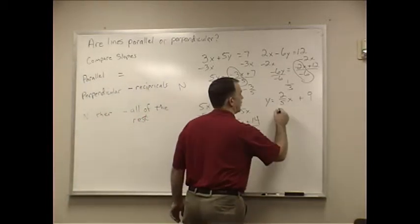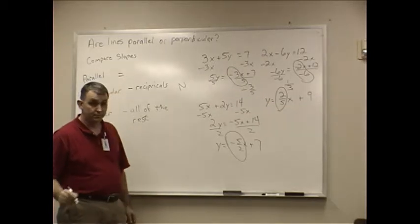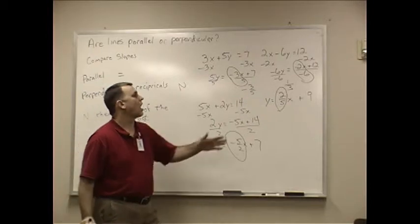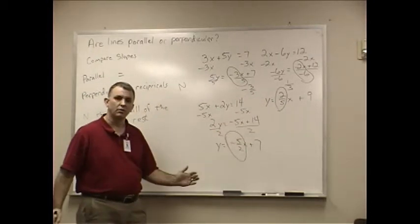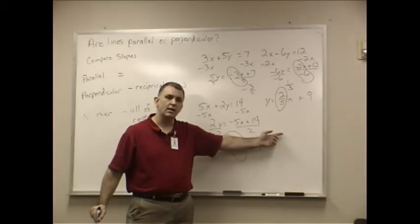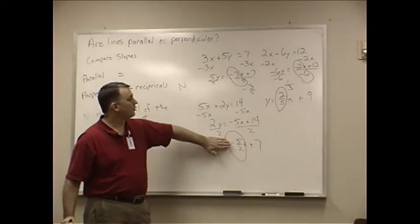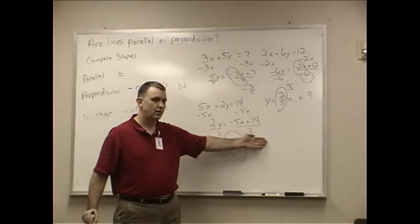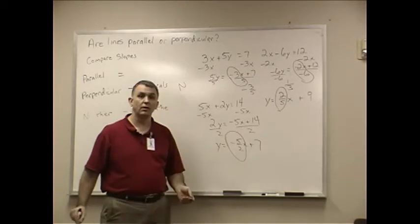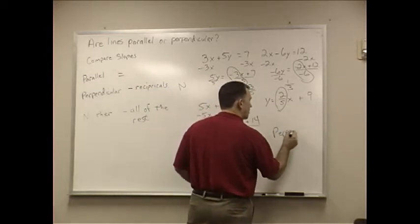This one, oh thank goodness, it's already in slope-intercept form. 2 fifths. Are these the same? The answer is no. Are these negative reciprocals of each other? If I take this one and flip it and make it negative, they would both be negative 5 halves. Or if I took this one and flipped it and changed its sign to positive, they would both be positive 2 fifths. So these two lines here are perpendicular.